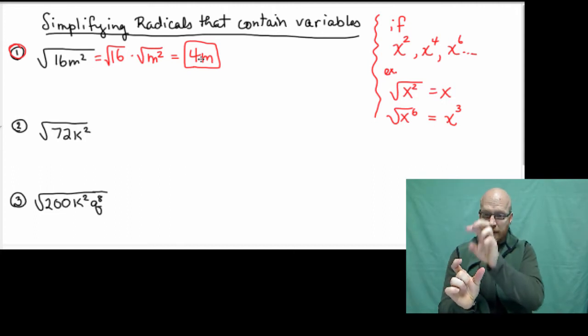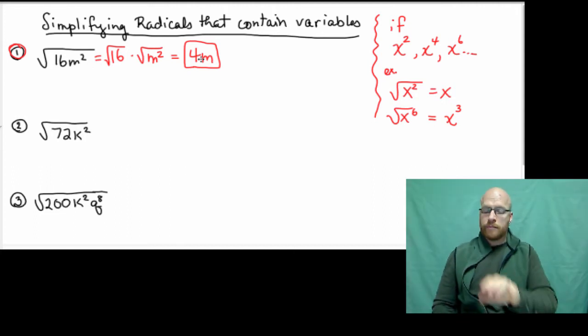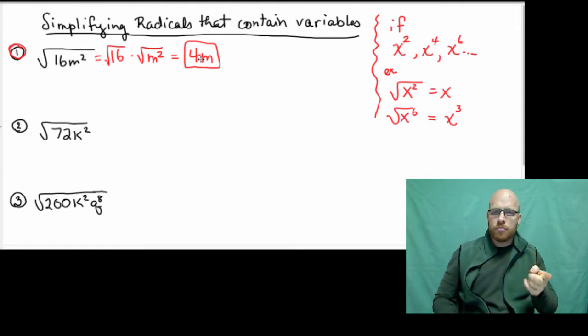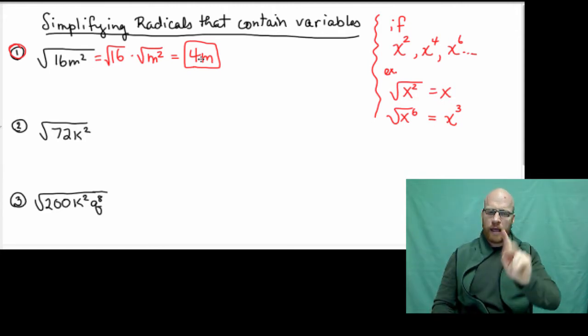And that's our final answer. We split the numerical part from the variable, took the square roots, and combined them together. The answer is 4m. Now we have 72k squared.